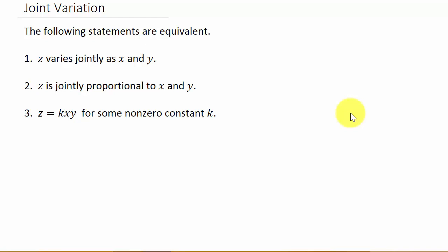Alright, so in this video we're going to look at joint variation. All of these statements here are equivalent. So basically what they're going to tell you is they'll say Z varies jointly as X and Y, or Z is jointly proportional to X and Y.